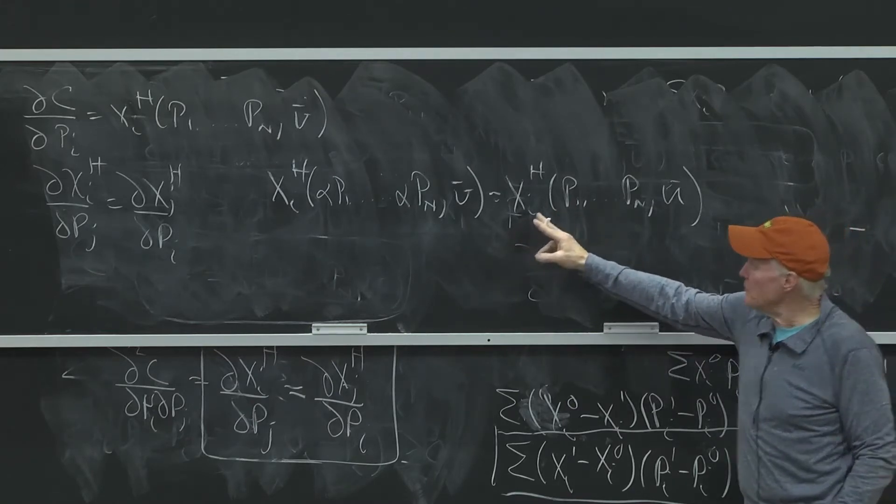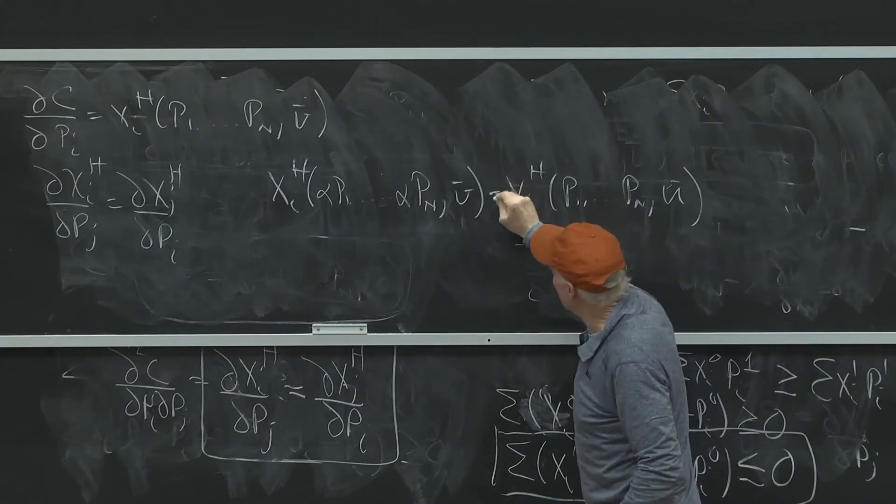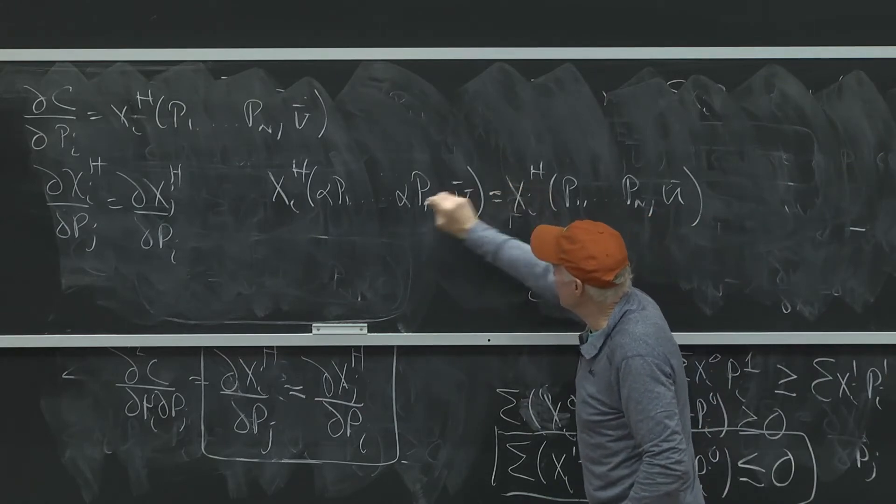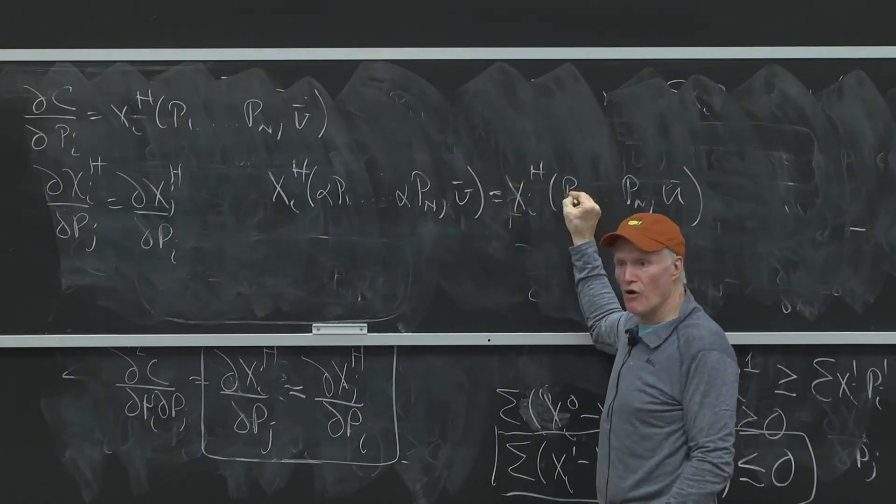Differentiate both sides. Remember, this holds for all values of alpha. These two are equal for all alpha.